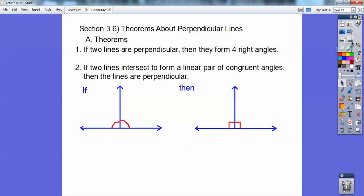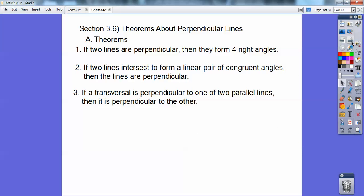If a transversal is perpendicular to one of two parallel lines, then it's perpendicular to the other. So here's a transversal that's perpendicular right here to these two parallel lines, so if it's perpendicular to that one, it's perpendicular to the other parallel line also.